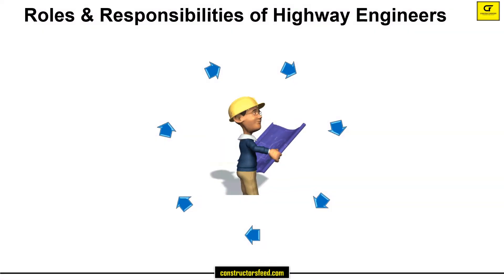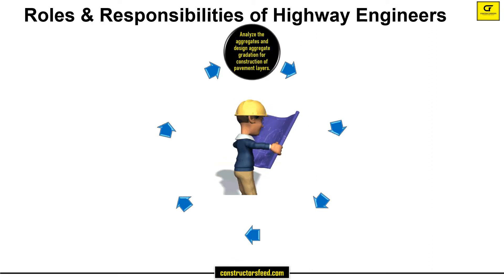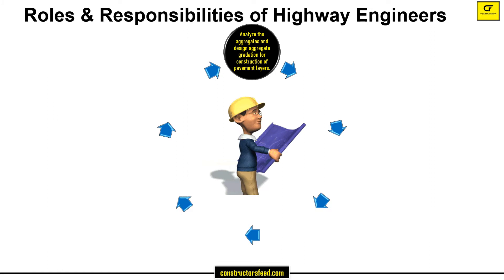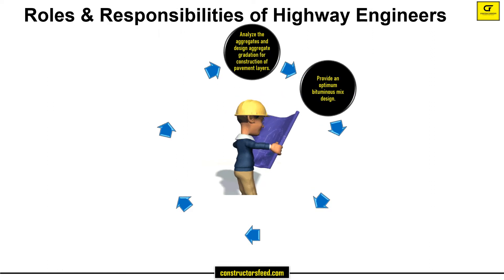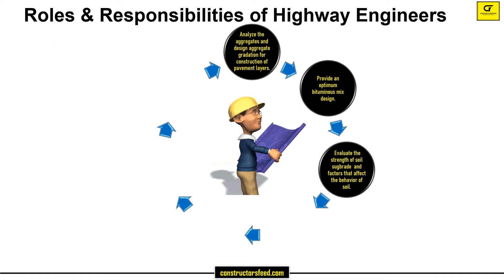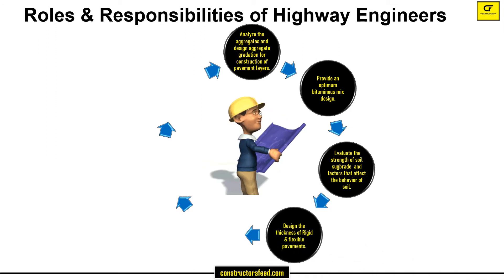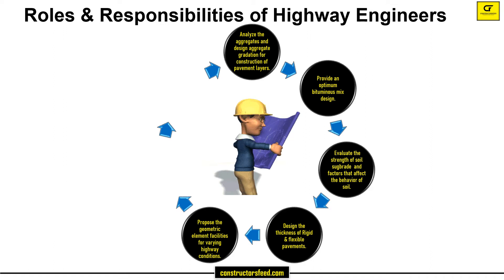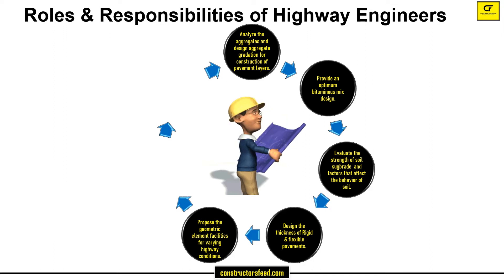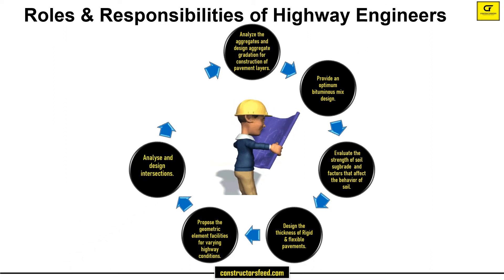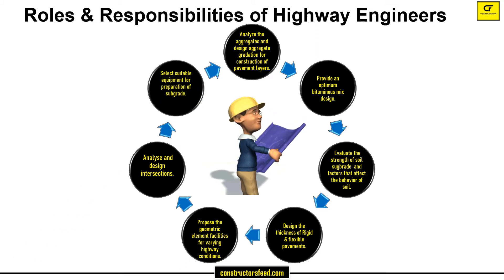Some of the roles and responsibilities of highway engineers include: analyzing aggregates and designing aggregate gradation for pavement layers, providing an optimum bituminous mix design, evaluating the strength of soil subgrade and factors affecting soil behavior, designing the thickness of rigid and flexible pavements, proposing geometric element facilities for varying highway conditions, analyzing and designing intersections, and selecting suitable equipment for preparation of subgrade.